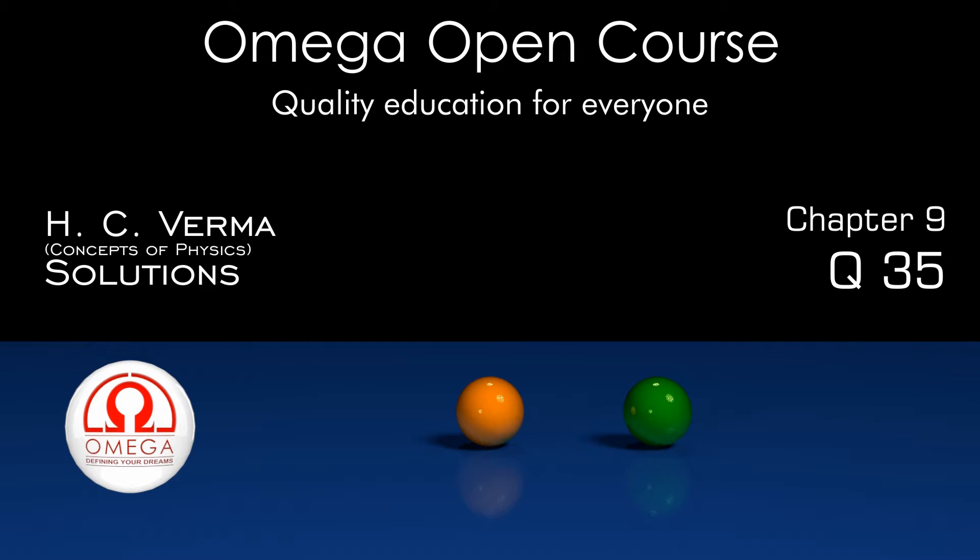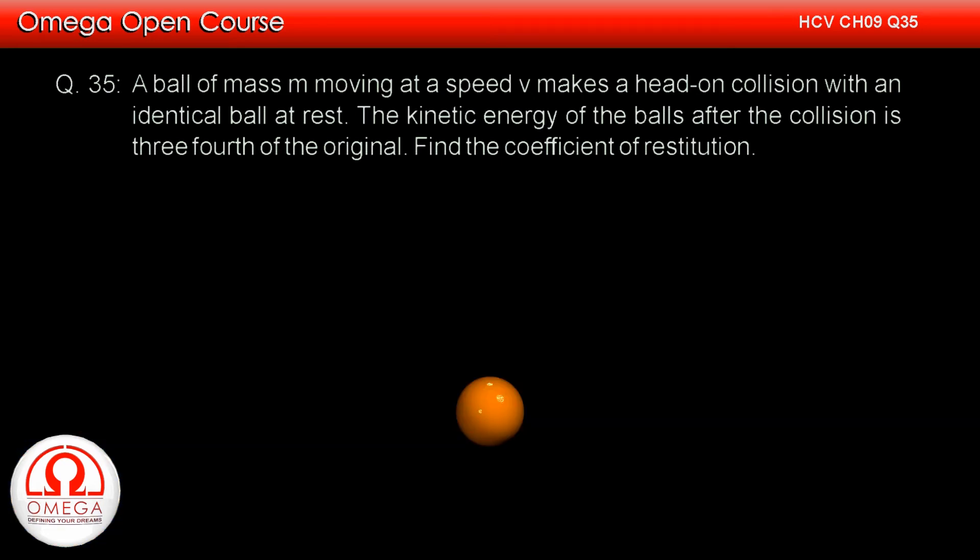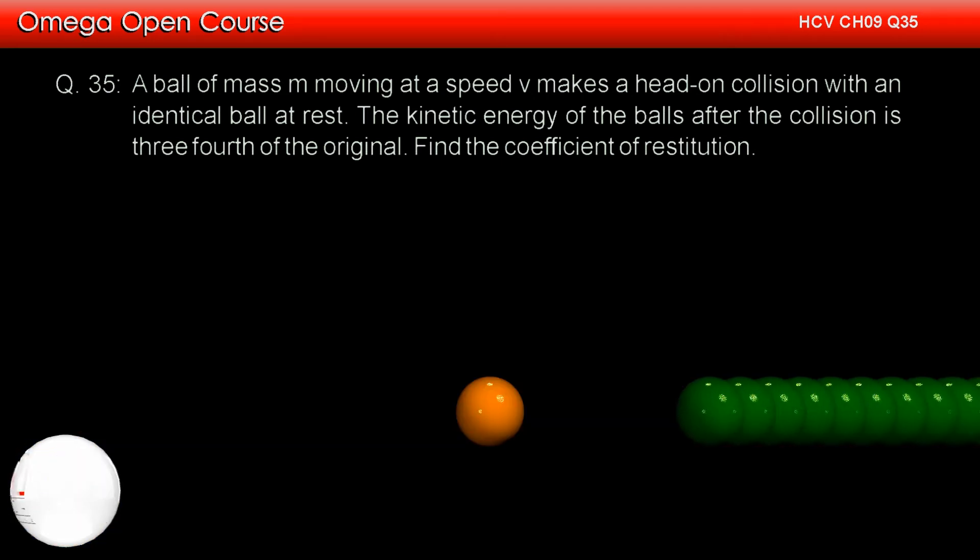H.C. Varma Chapter 9 Question No. 35. A ball of mass M moving at a speed V makes a head-on collision with an identical ball at rest. The kinetic energy of the balls after the collision is three-fourth of the original. Find the coefficient of restitution.